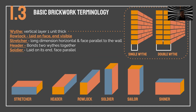There are other important terms: a wythe is a vertical layer one unit thick; a double wythe is when you have two elements side by side. The sides of a brick have names depending on how that side is used in the wall: a stretcher shows the long face; a header shows only the short end of the brick; a rowlock is the brick placed on its side vertically; a soldier is a brick standing upright like a book. There are also sailor and shiner orientations.